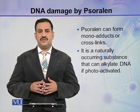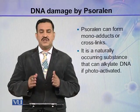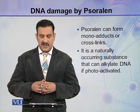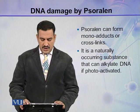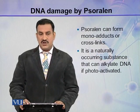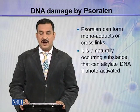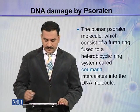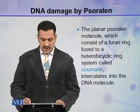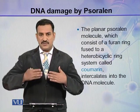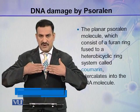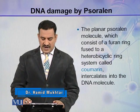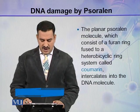Psoralen is another example of a compound with two reactive sites that can simultaneously form monoadducts as well as crosslinks in the DNA molecule. Psoralen is a naturally occurring substance that can alkylate DNA if it is photoactivated in the cell. The psoralen molecule is a planar molecule that exists in a single plane, consisting of a furan ring fused to a heterobicyclic ring system called coumarin.